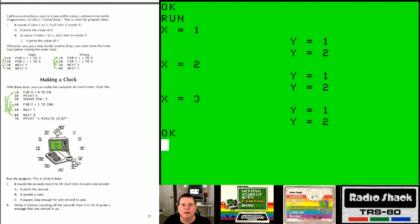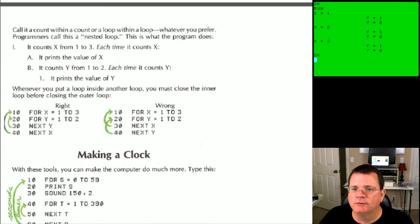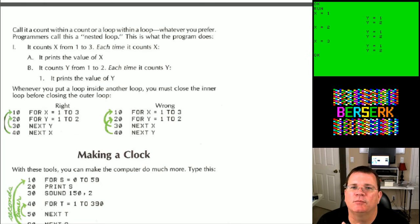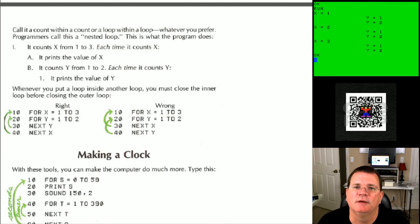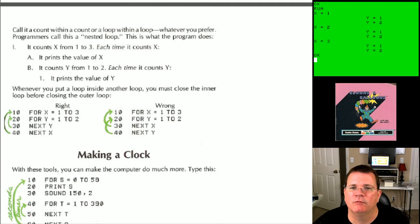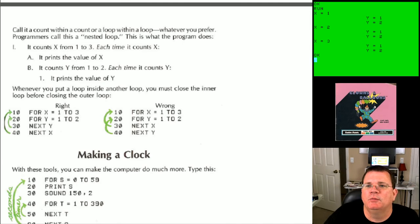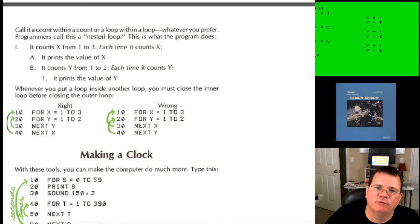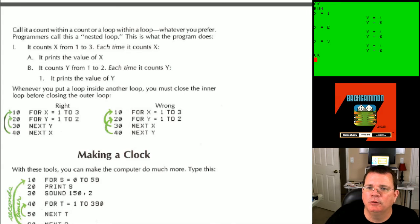The book calls this 'a count within a count' or 'a loop within a loop' — programmers call it a nested loop. It counts X from 1 to 3, printing X each time, then counts Y from 1 to 2, printing Y each time. The key rule: whenever you put a loop inside a loop, you must close the inner loop before closing the outer loop. So NEXT Y comes before NEXT X — that's the right way. Reversing them is the wrong way.